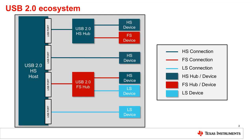The USB 2.0 specification allows for three different connection speeds: low speed, which is 1.5 megabits per second; full speed, which is 12 megabits per second; and high speed, which is 480 megabits per second.